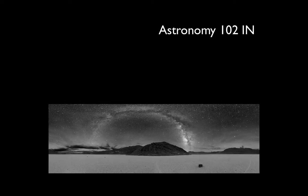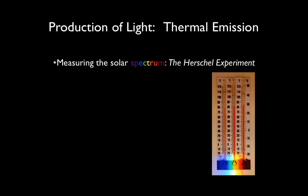Hello again. Welcome to another video for Astronomy 102. Today's topic is the production of light. Light can be produced in a few different ways, but in this video we will focus on light production via thermal emission.